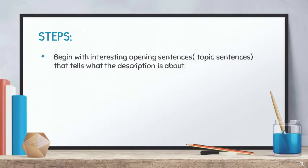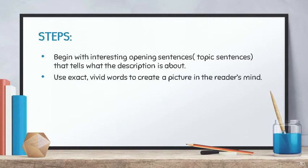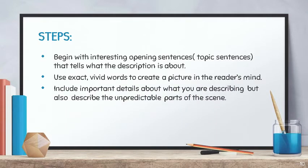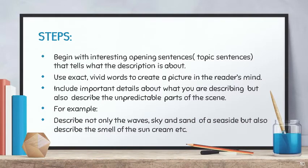Steps to remember: Begin with interesting opening sentences or topic sentences that tell what the description is all about. Use exact, vivid words to create a picture in the reader's mind. Include important details about what you are describing, but also describe the unpredictable parts of the scene — for example, describe not only the waves, sky, and scent of a seaside, but also the smell of sunscreen, etc.